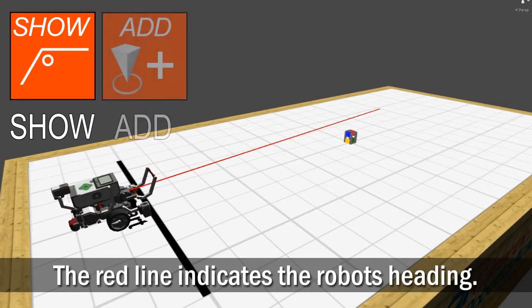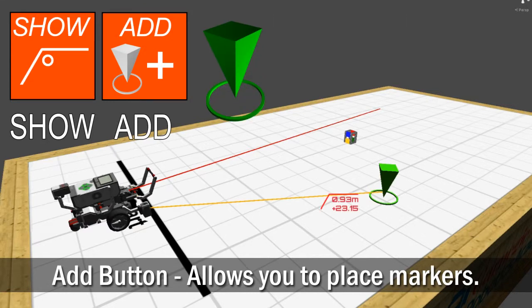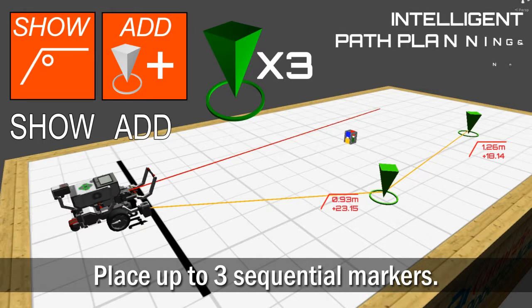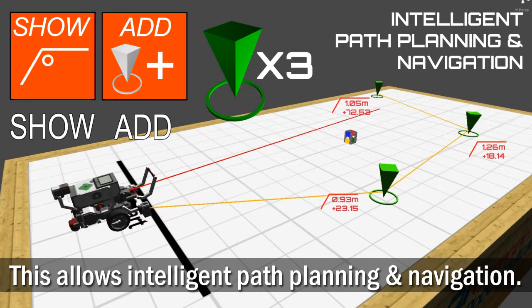Once the toolkit is turned on, pressing the Add button allows you to place markers in the world. You can place up to three sequential markers, allowing intelligent path planning and navigation of the environment.